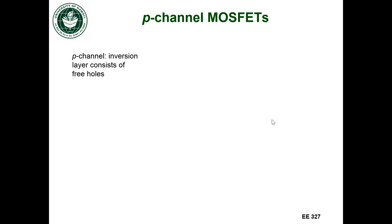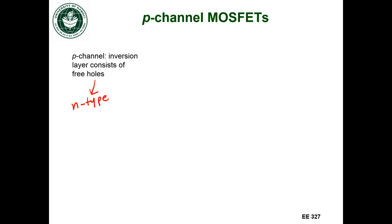There is also the P-channel MOSFET. For the P-channel MOSFET, the inversion layer is going to be free holes. And again, since this inversion layer is made out of minority carriers, this means that the semiconductor of the MOSFET should be N-type.